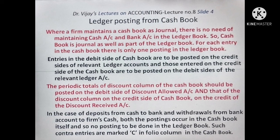In case of deposits from cash to bank or withdrawals from bank to firm's cash, both postings occur in the Cash Book itself, so no posting is to be done in the Ledger Book. Such entries are marked 'C' in the folio column. Where cash is deposited to bank, it is posted in the bank column; where cash is withdrawn from bank, it is posted in the debit of cash column and credit side of bank column — both closed with the C mark. For contra entries, there is no posting from Cash Book to any ledger account.